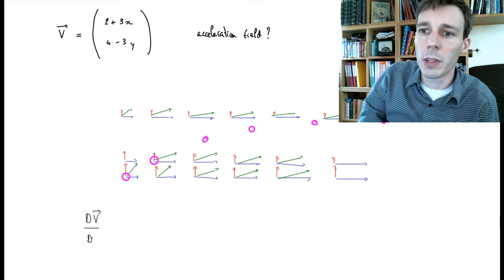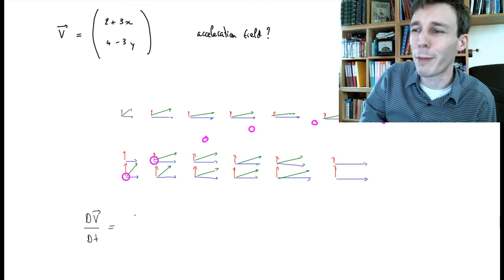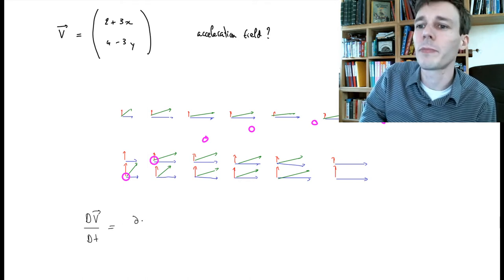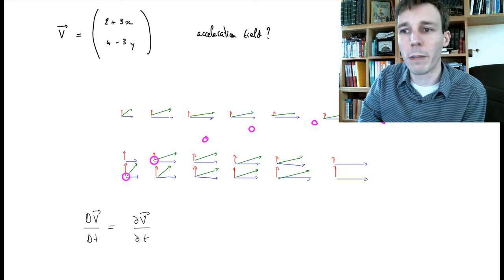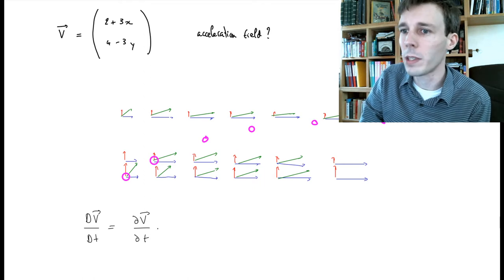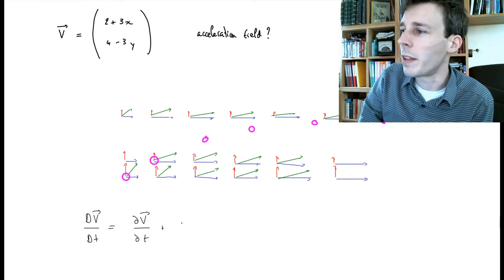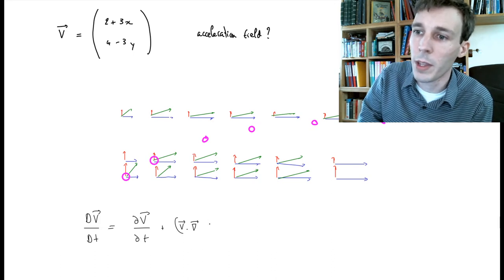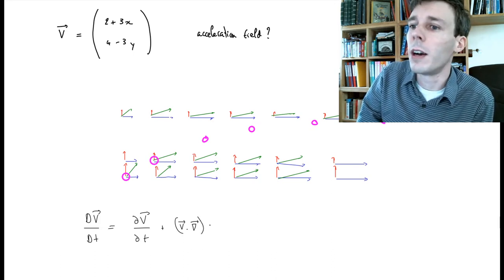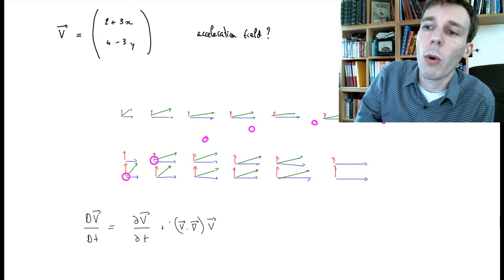The total time derivative of the velocity field is by definition written as the partial derivative of the velocity field with respect to time, plus an operator called the advective operator — sometimes also called the convective operator — which is the velocity dotted with the nabla operator applied to the velocity field.